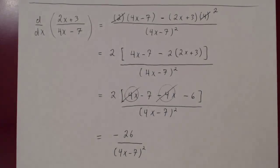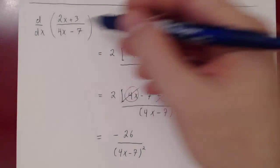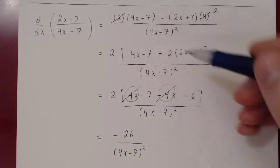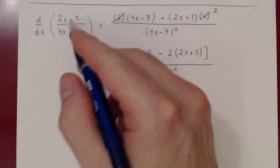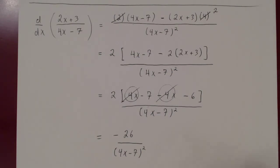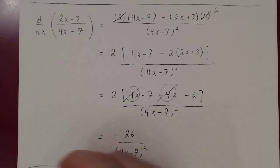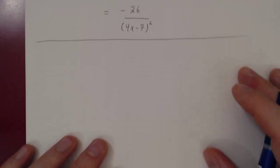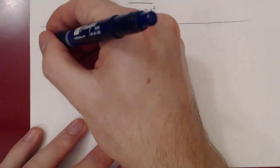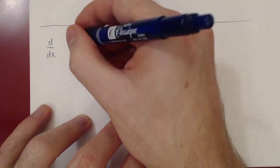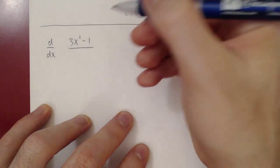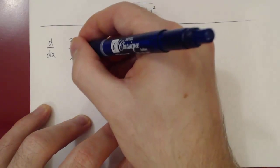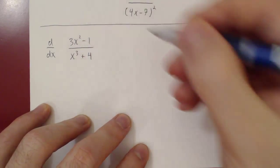You can see it's much faster with the quotient rule than it would have been with the limit. Let's do one more example where we have on the top not just linear terms but higher powers of x. What if we had the derivative of (3x² − 1) over (x³ + 4)?